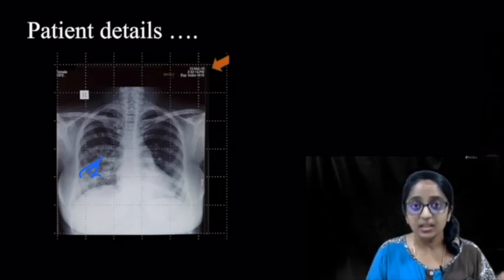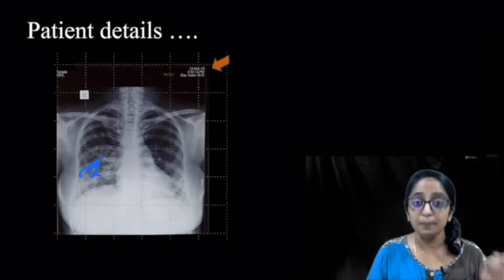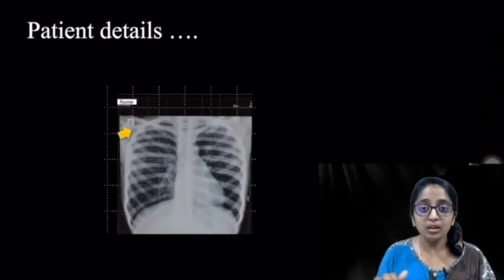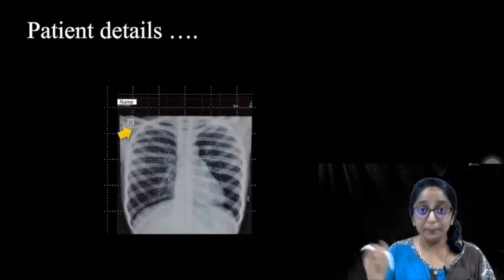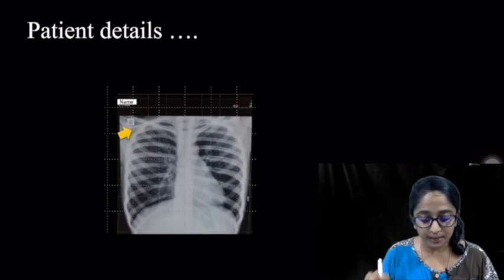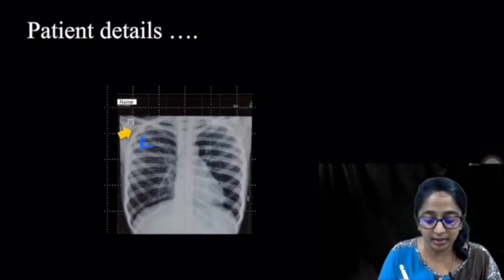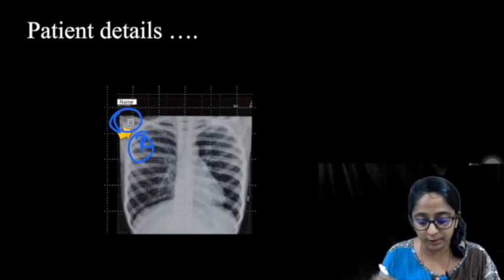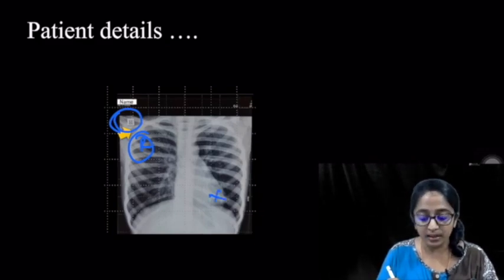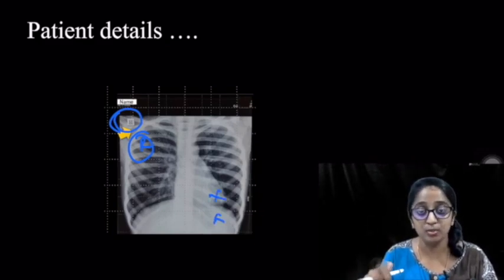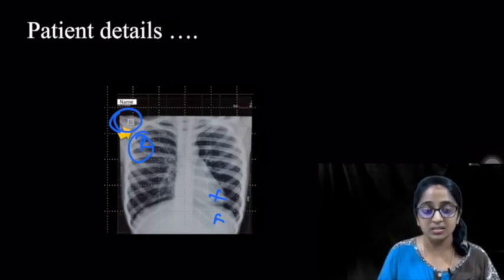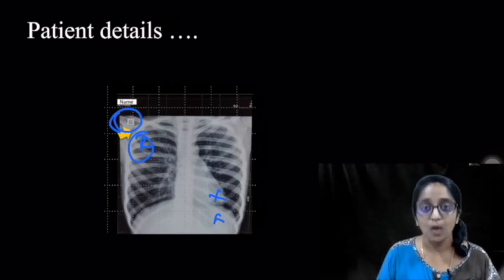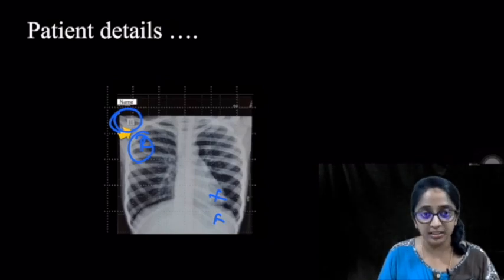Finally, look at the laterality — establish the right and left sides based on what is provided in the radiograph. As mentioned in the first lecture, do not rely on the lung apex or the stomach bubble to establish right and left sides, as you may end up wrong. So the three things under patient details are: name and age, date or time, and laterality.